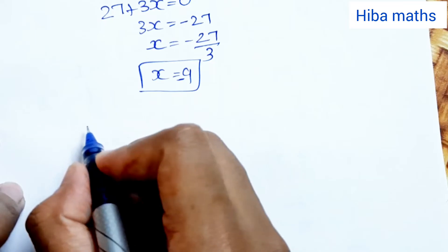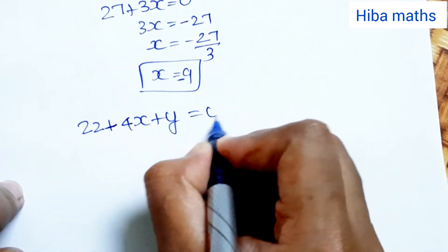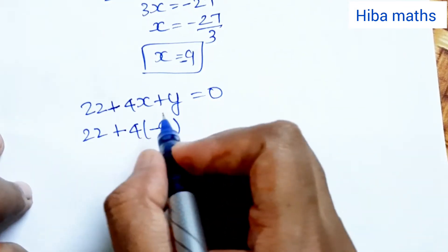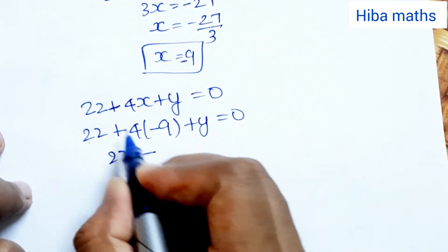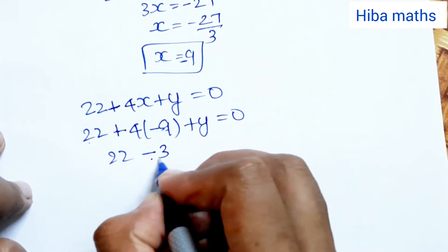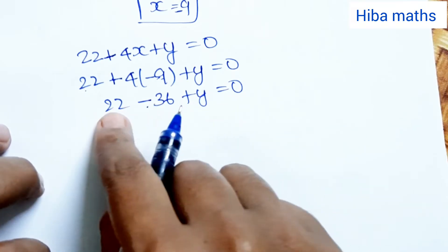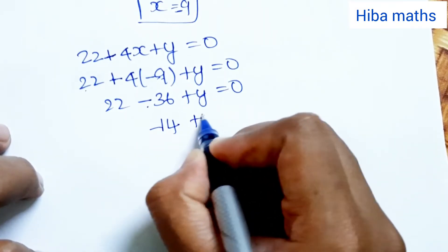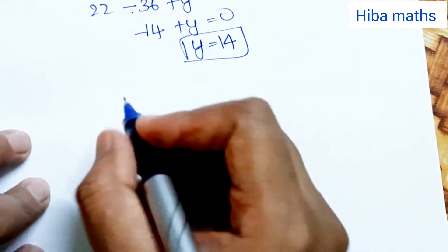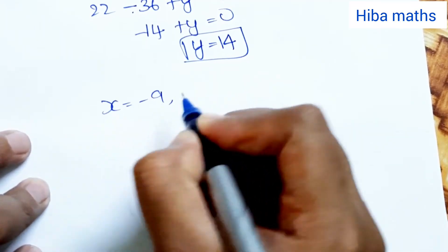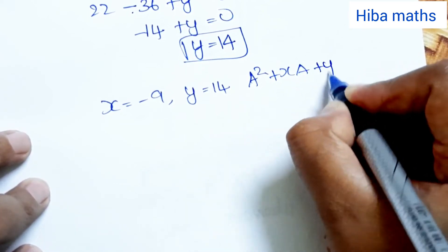Substituting x = −9 into the first equation: 22 + 4(−9) + y = 0 → 22 − 36 + y = 0 → −14 + y = 0, therefore y = 14. So x = −9 and y = 14.